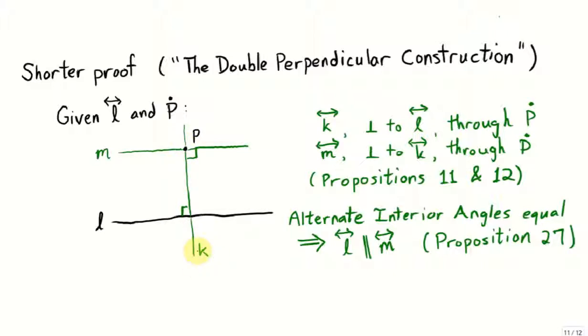Next, construct a perpendicular to the line K through the point P, and we'll call that line M. We know we can do these constructions.